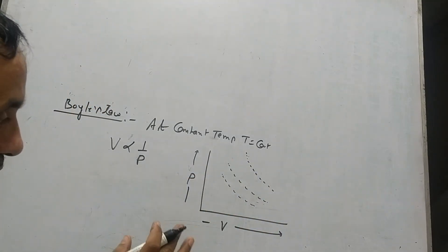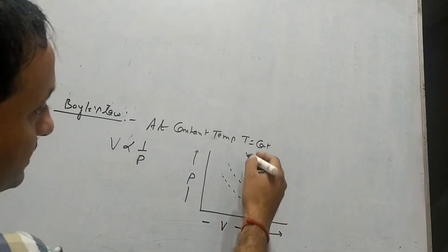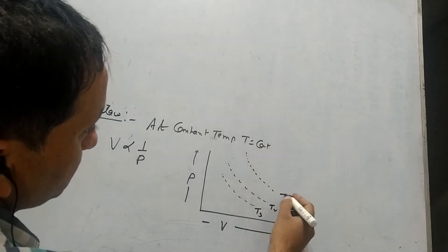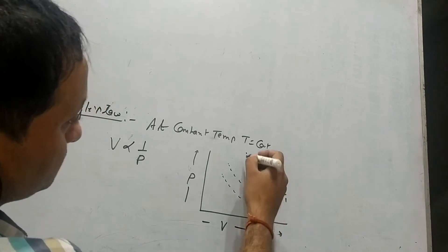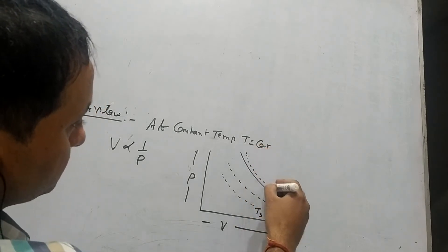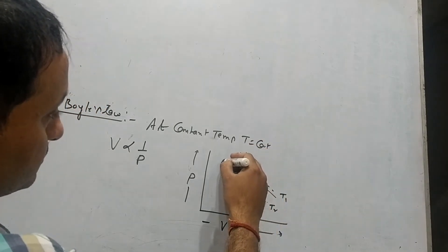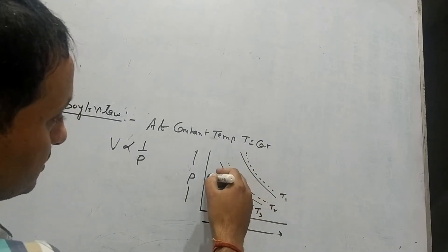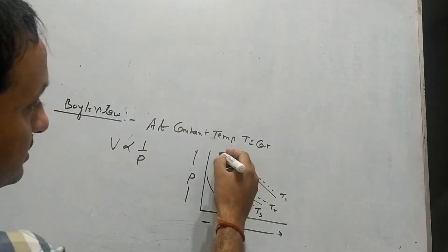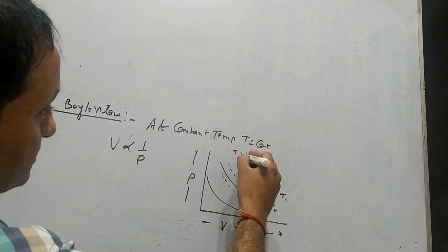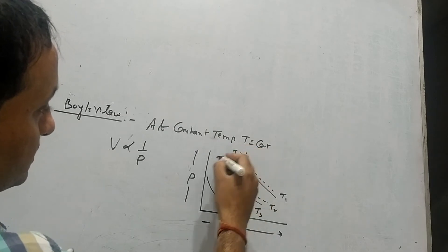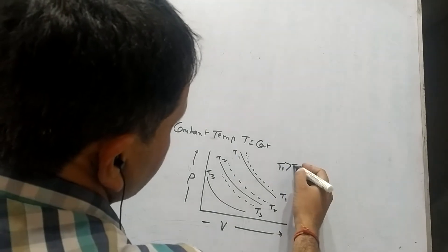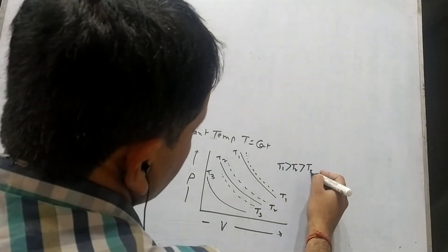Now, what do we see experimentally and practically? There are three temperatures: T3, T2, and T1. The experimental curves correspond to temperatures T1, T2, and T3 respectively, where T1 is greater than T2 is greater than T3.